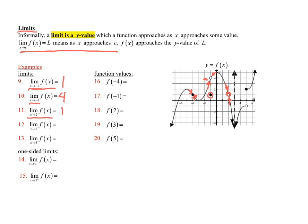When x approaches 3, that's this vertical asymptote right here. Since I have a vertical asymptote, I would be approaching either negative infinity or infinity. As I approach 3 from both sides, I'm going to approach negative infinity. We do say this limit doesn't exist, but since both sides are going to the same place — negative infinity — we do call it negative infinity. If one side went to negative infinity and the other to positive infinity, then we'd say it does not exist.